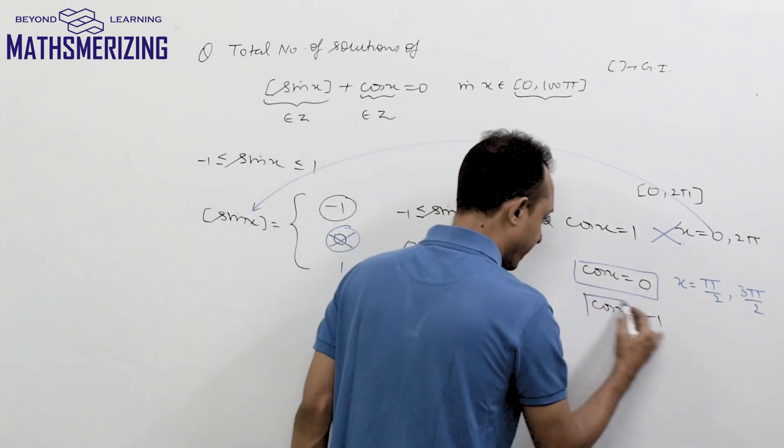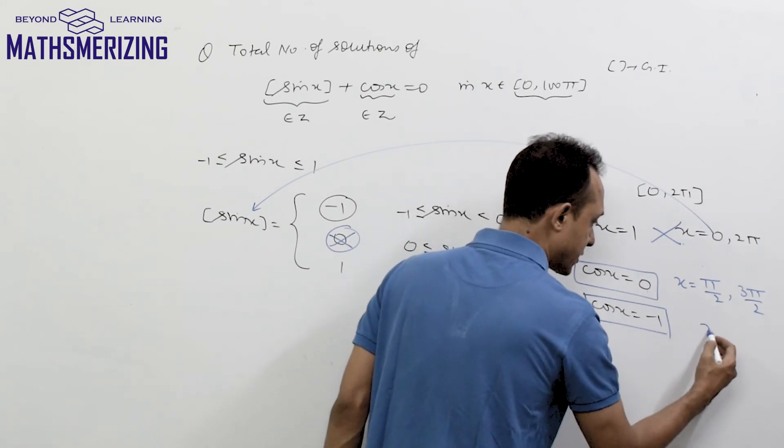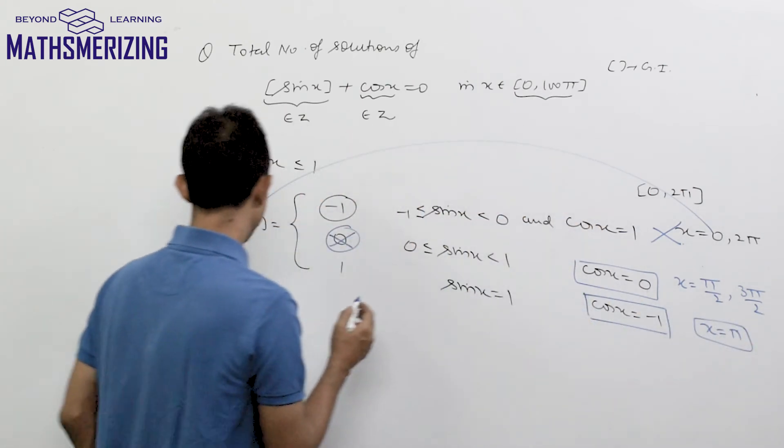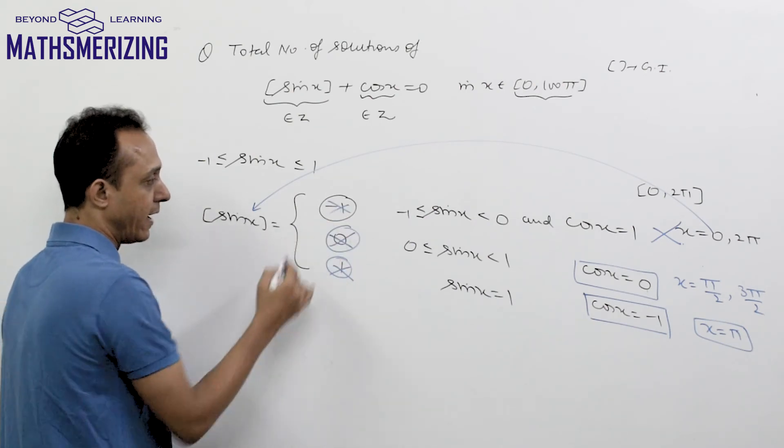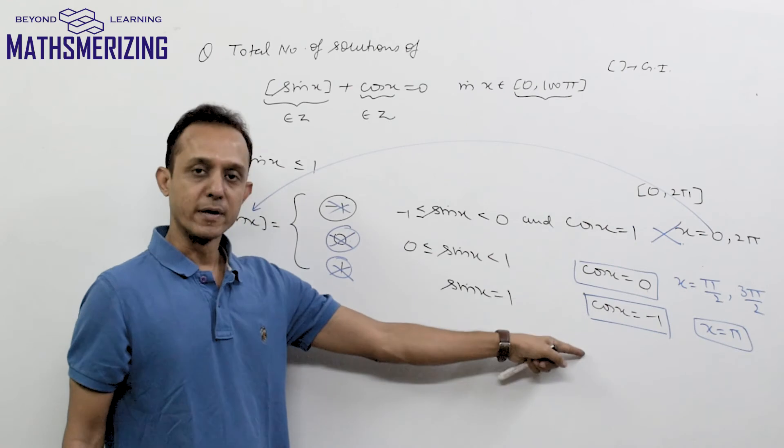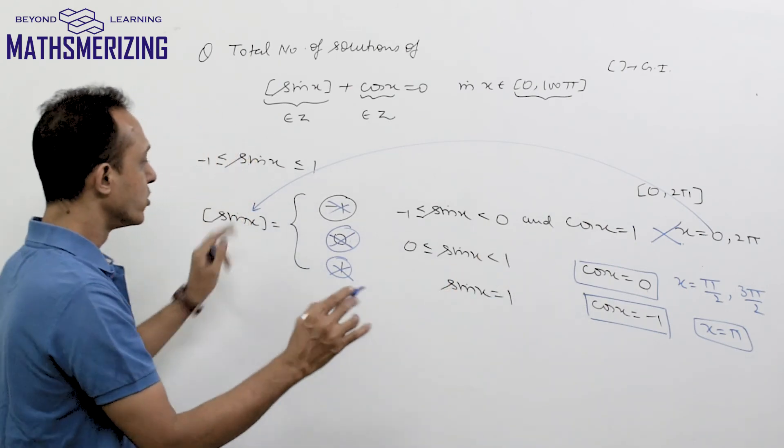For the third case, cos x = -1 when x = π. When x = π, sin π = 0, so [sin x] = 0. Again, I get 0.